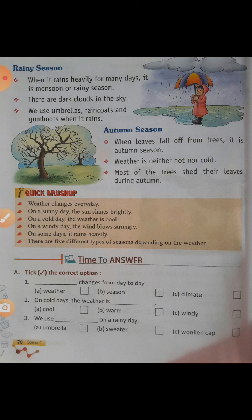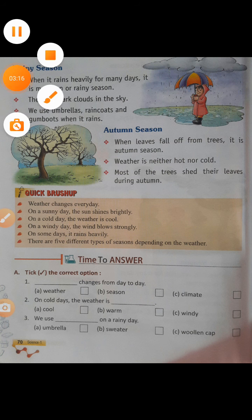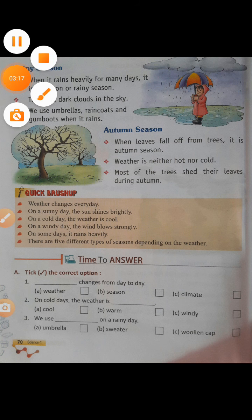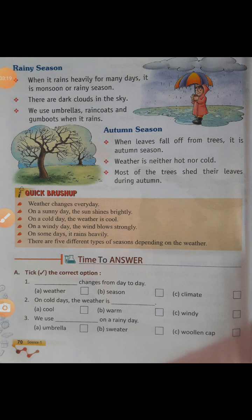Next topic hai Autumn Season. Autumn ka matlab hota hai patjhad ritu. Is mausam mein na zyada garm hota hai na zyada cold hota hai. Aur is mein jo ped hote hain, maximum ped apni pattiyon ko gira dete hain.